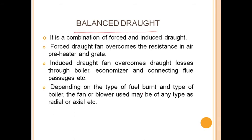Balanced draught is a combination of forced and induced draught. Forced draught fans overcome the resistance of the air preheater and grate, while induced draught fans overcome the draught losses through the boiler, economizer, and connecting flue passages. Depending upon the type of fuel burned and the type of boiler, the fans and blowers may be of any type — radial or axial, etc.